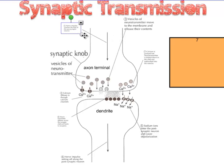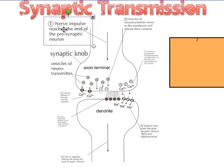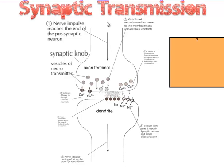You have to have a strong understanding of how the action potential gets transmitted along the axon. If you remember, it's sodium ions rushing in and potassium ions rushing out. When sodium ions rush in, it's called depolarization. When potassium ions rush out, that's called repolarization. That's going to change the overall potential difference, measured in millivolts — from negative 70, it jumps up to positive 30 millivolts.